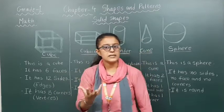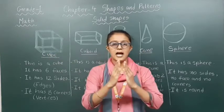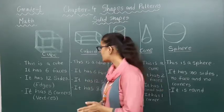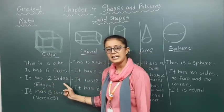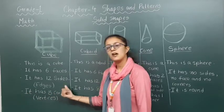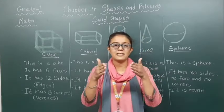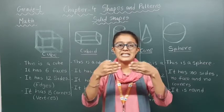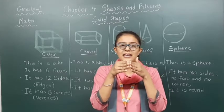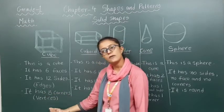A cube has 12 edges. What are edges? Edges are where two squares meet — they are also known as sides. So a cube has 12 sides or edges. A cube also has 8 vertices. What are vertices? Vertices are where the edges meet — where you get a corner. It has 8 corners or vertices.